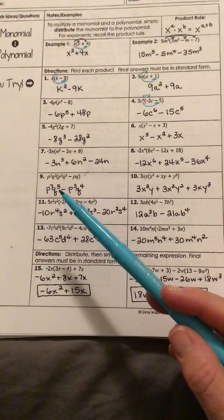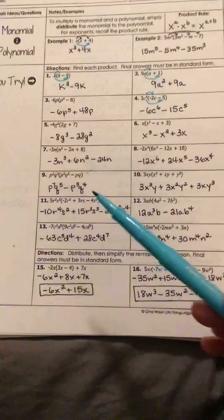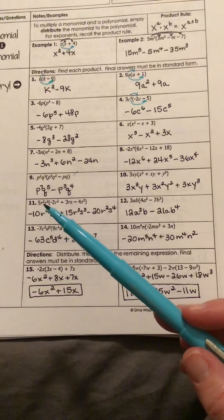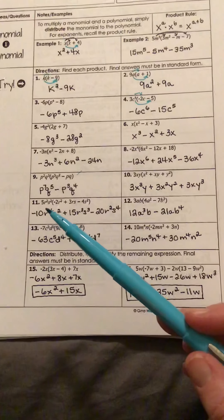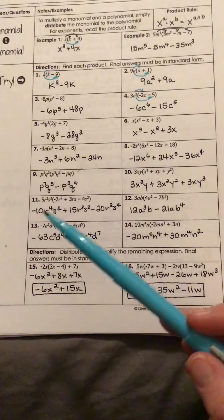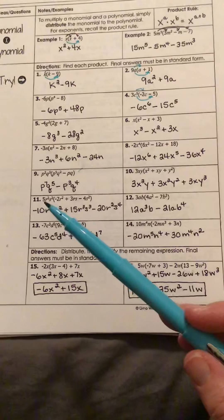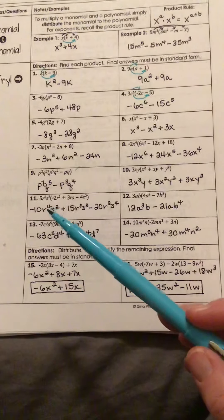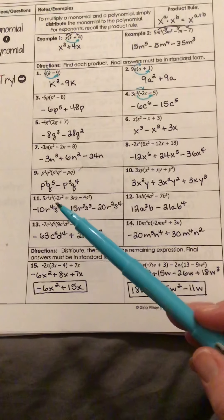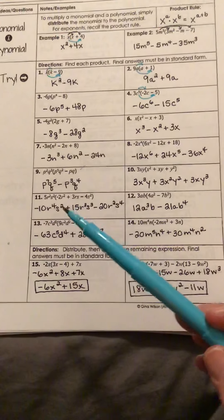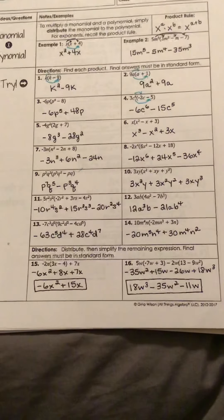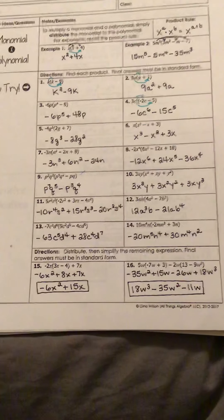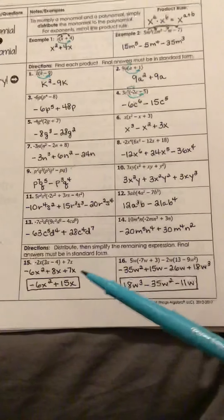Anything tricky there — you've got lots of p's and q's. It's getting big. So again, this is just about paying attention. I have 5 times negative 2, so I have negative 10, and then r to the second power times r to the second power gives r to the fourth power, and then you have an s squared left over. Again, nothing too tricky — just watch out for the variables and the signs.